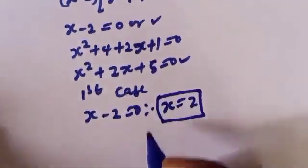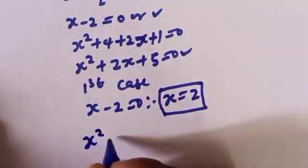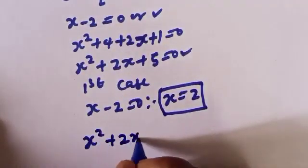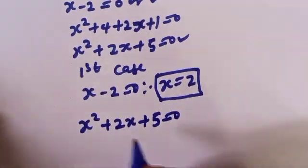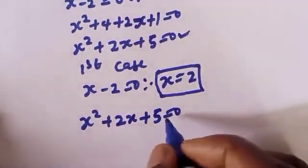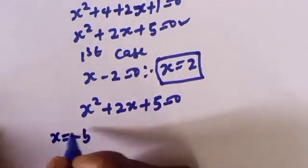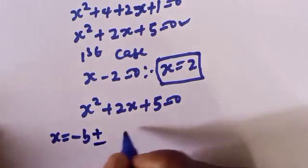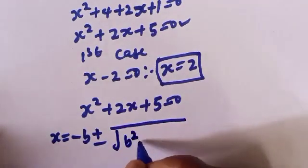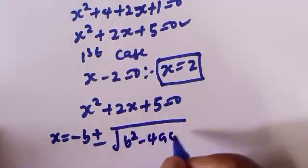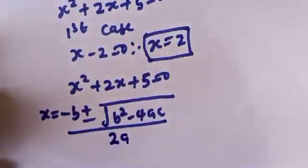From the second case: s squared plus 2s plus 5 is equal to 0. We solve this using the quadratic general formula: s is equal to minus b plus or minus square root of (b squared minus 4ac), all over 2a.